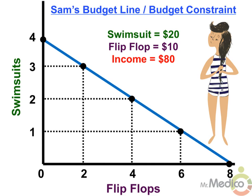If Sam is considering eight flip-flops and zero swimsuits, we can determine the opportunity cost of buying one swimsuit. To buy one swimsuit from this point, she would have to sacrifice two pairs of flip-flops, which is eight flip-flops minus six flip-flops. And to get one more swimsuit, she would sacrifice two additional pairs of flip-flops, or six minus four. As you can see, the opportunity cost of one swimsuit is always two pairs of flip-flops. We are simply dividing the change in flip-flops over the change in swimsuits.